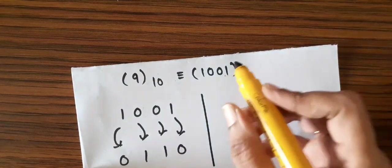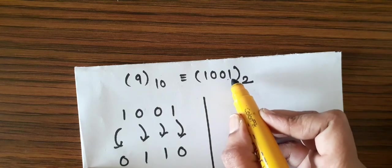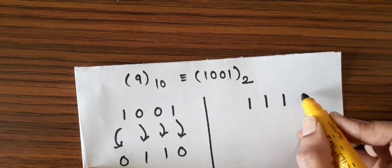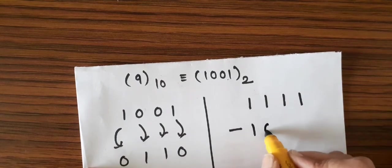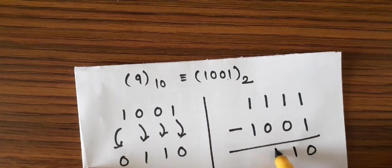The alternate method is this: the binary representation consists of 4 bits. So we will use the maximum valued bit 1 from binary to subtract this 9 from it, which also gives us the same result.